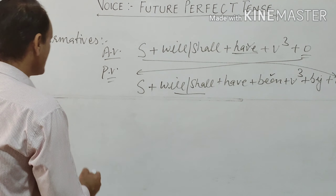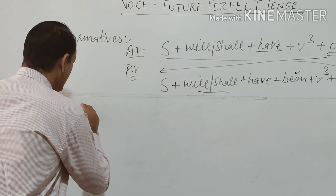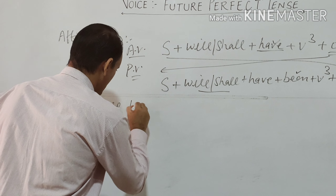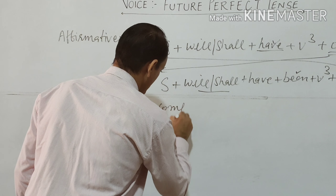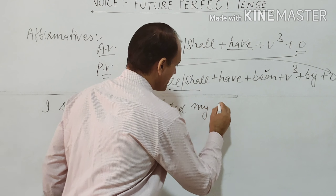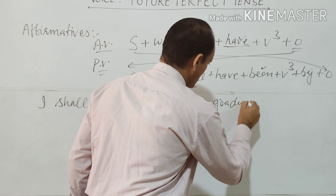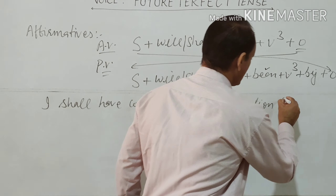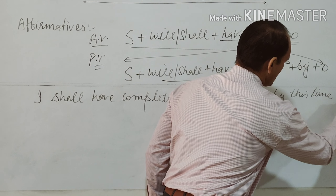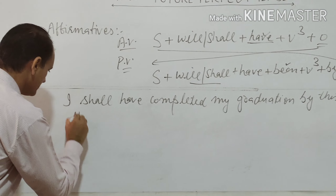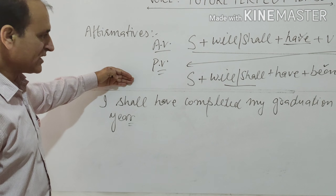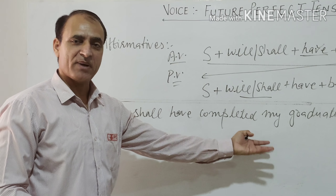Now let's make a sentence. Our sentence in active voice is: I shall have completed my graduation by this time next year. This is our active voice sentence.